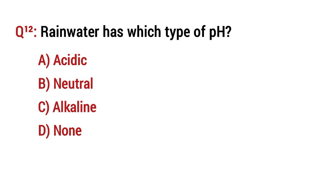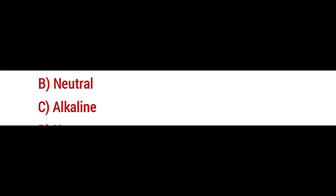Question number 12: Rainwater is which type of pH? The right option is A: Acidic.